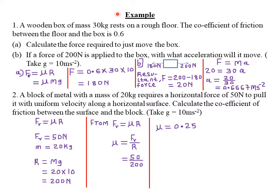Today we are looking at more examples involving Newton's Laws of Motion, and specifically the part involving the frictional force. The first example reads that a wooden box of mass 30 kg rests on a rough surface. Remember, if the surface is rough, it means that frictional force does exist. The coefficient of friction between the floor and the box is 0.6, and we are required to calculate the force required to just move the box. The force required to just move the box is a force that will help in overcoming the frictional force.